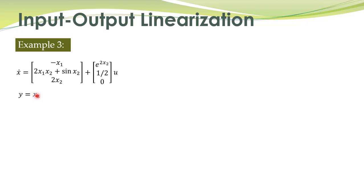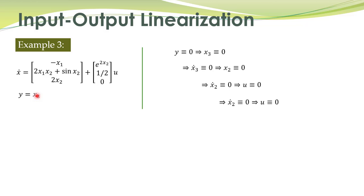We remember the procedure: first we check whether the internal dynamics are stable or not. For that purpose, we find the internal dynamics. We set the output to be identically equal to zero — that means x3 is identically equal to zero. If x3 is identically zero, its derivative will also be identically equal to zero, so x3 dot equals zero, which implies x2 is also identically equal to zero.